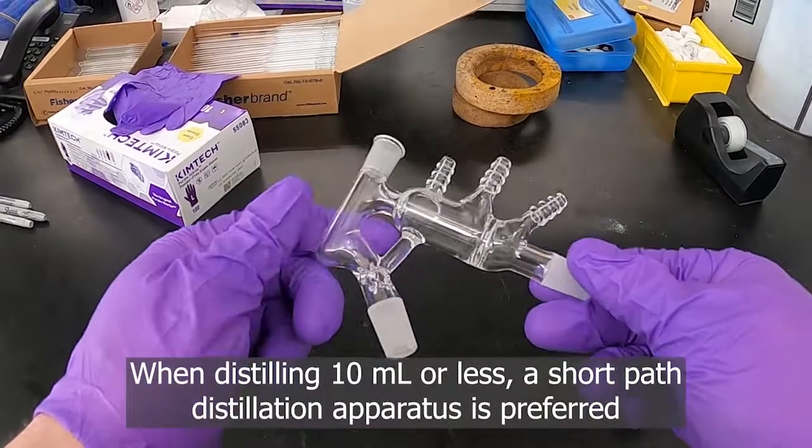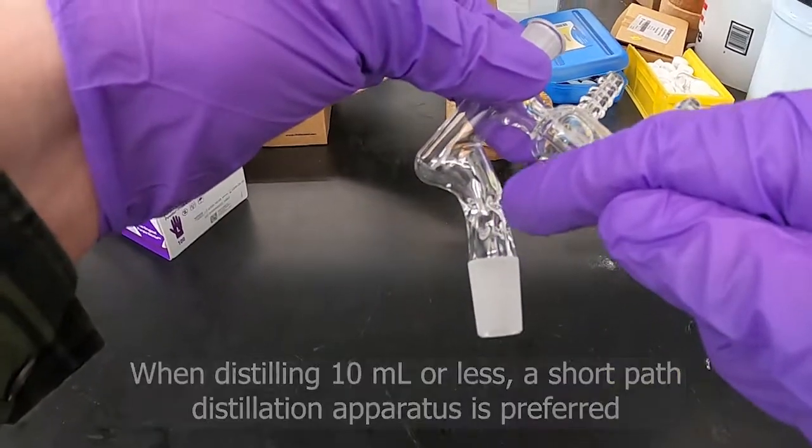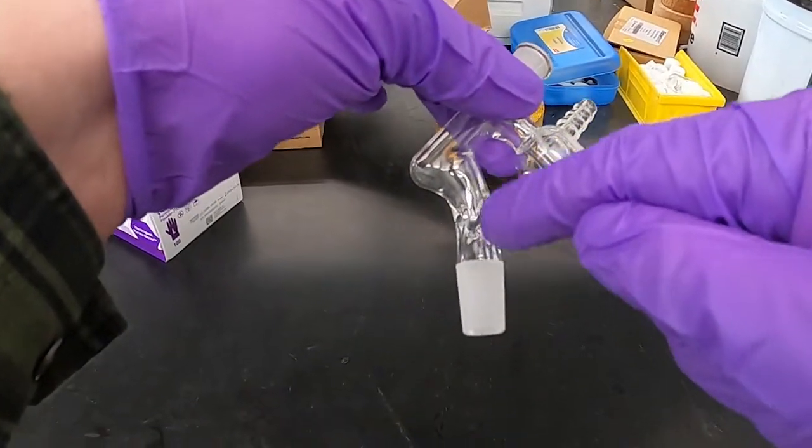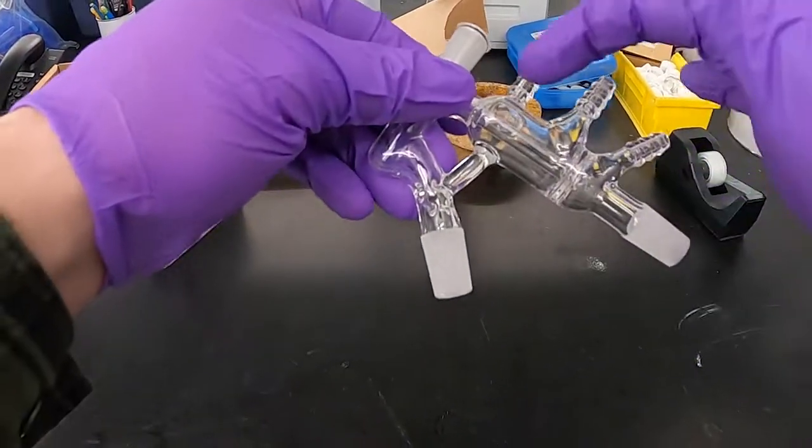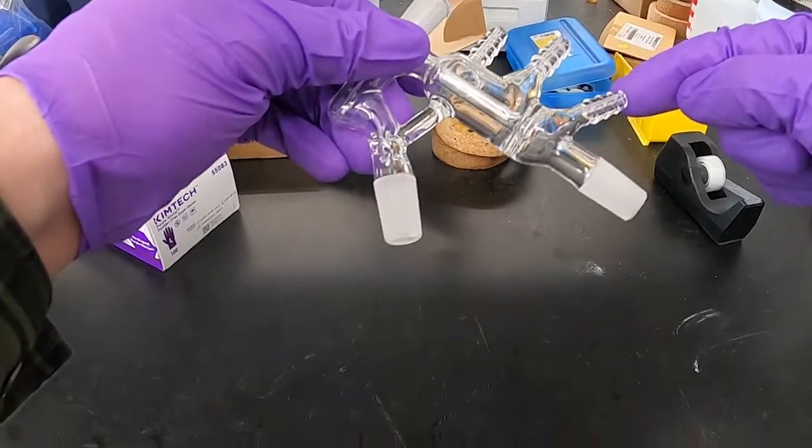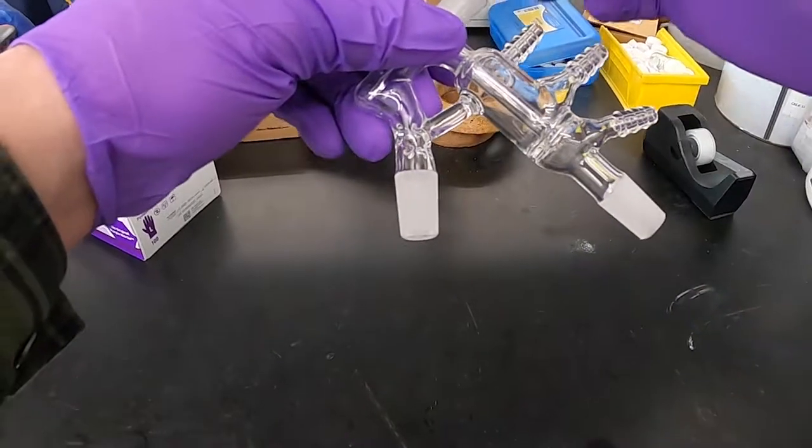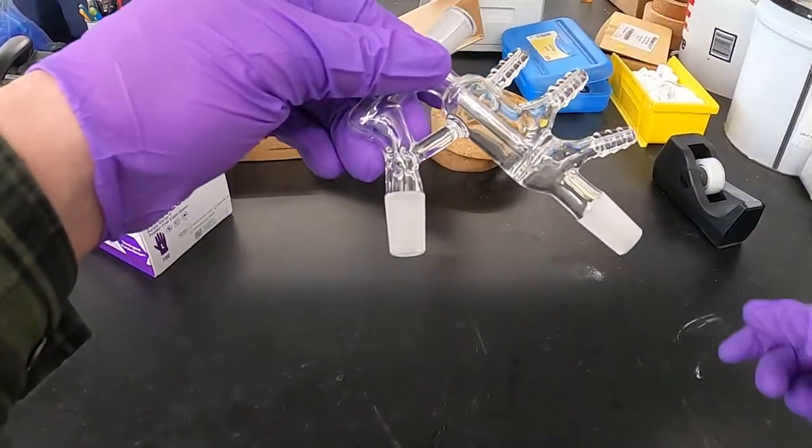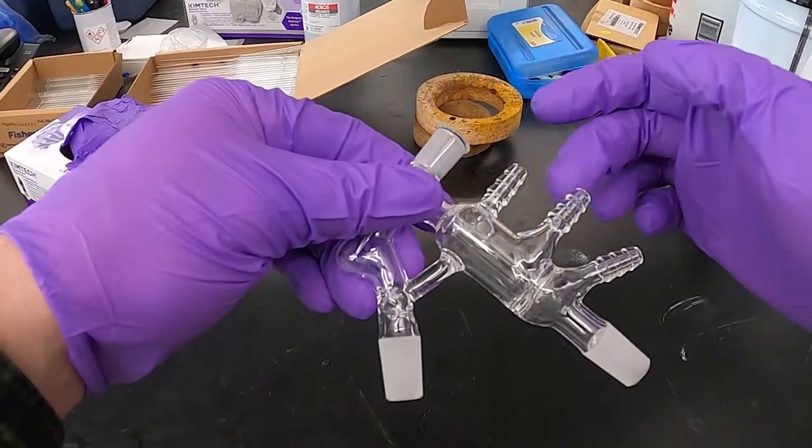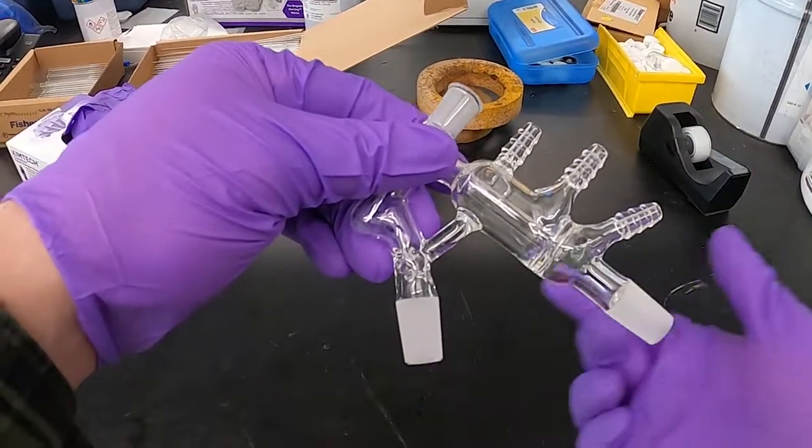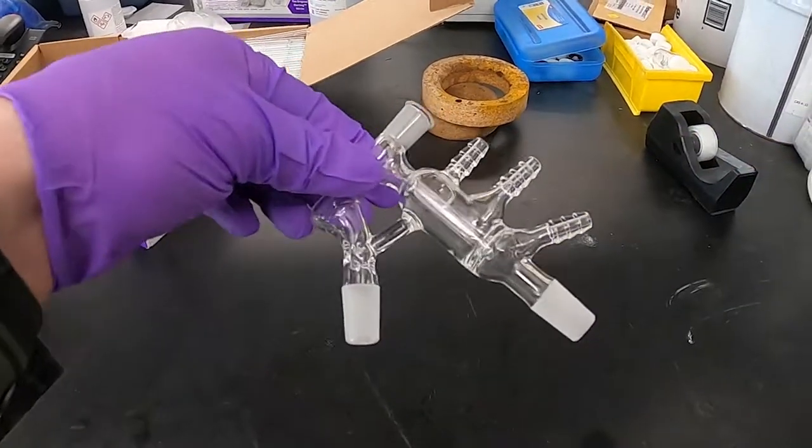Here's an example of one of those really small short path distillation setups. You can see here there's some little fingers, this has got a bit of a Vigreux type column to it, and then some more space to cool things and even a small portion that can be a water jacket, your vacuum adapter, and then ports for your flasks to distill from and to collect into, and then space for a thermometer. So this is probably the smallest that you can get.